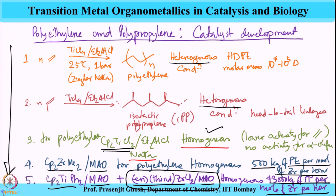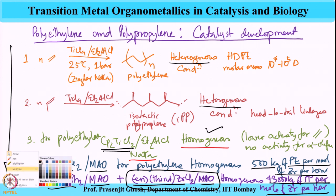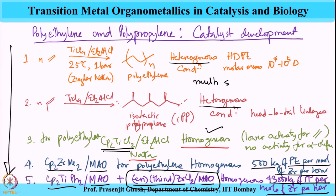As we move from homogeneous to heterogeneous, the heterogeneous catalysts are multi-site. For the homogeneous ones, these are all single-site catalysts. Single-site catalysis means the polymer has a narrow polydispersity index (PDI) and the polymers are much more well-behaved in terms of their properties. Let us now focus on this ANSA complex which has extremely good activity for polypropylene.